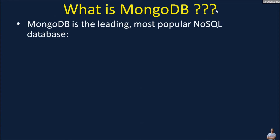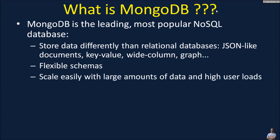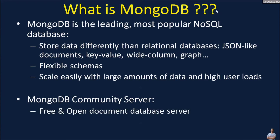MongoDB is the leading, most popular NoSQL database. It stores data differently than traditional databases, using document-like structures with flexible schemas — key-value, wide-column, graph, and more. Using MongoDB, developers can adapt to changing requirements easily and quickly. It can scale easily with large amounts of data and high user loads. To get started, you can use the MongoDB Community Server edition, which is free, open source, and cross-platform — you can run it on Linux, Mac, or Windows.